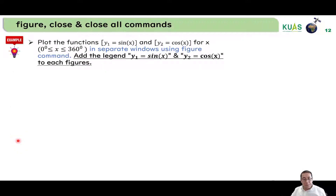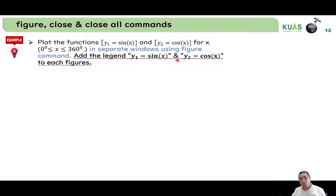Let's check this example. We need to plot the functions y1 = sine(x) and y2 = cosine(x) for x in the range 0 to 360, but we need to plot both in separate windows using the figure command. We also need to add a legend to each figure indicating y1 = sine(x) and y2 = cosine(x). Let's go to MATLAB and do that.